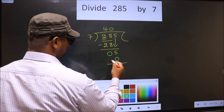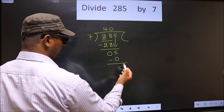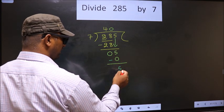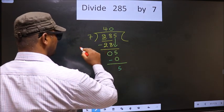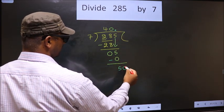Now you subtract 5 minus 0, 5. Over here, we did not bring any number down. And 5 is smaller than 7. So now you put a dot and take 0 here.